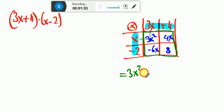3x squared plus 4x plus minus 6x plus 8. So finally, we add like terms. 4x minus 6x will be minus 2x. Look at it please, just here.